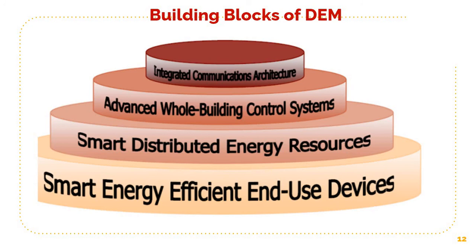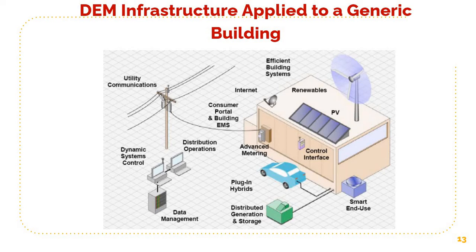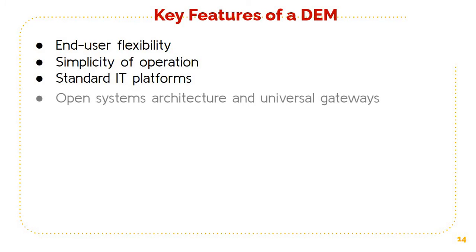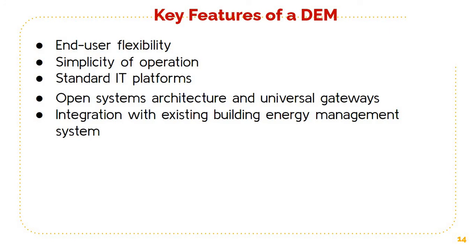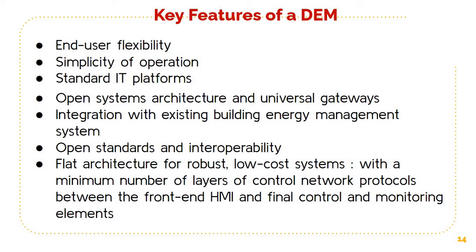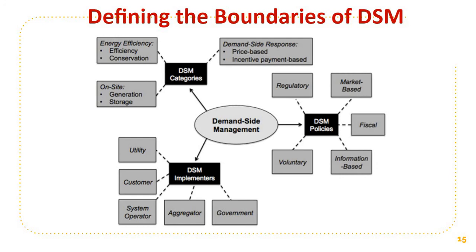You can see the four components listed as building blocks of DEM, and a picture shows the DEM infrastructure applied to a generic building. The key features of DEM are end-user flexibility, simplicity of operation, and standard IT platforms; open systems architecture and universal gateways; integration with existing building energy management systems; open standards and interoperability; and flat architecture for robust, low-cost systems — containing only the minimum number of layers of control network protocols between the front-end HMI and final control and monitoring elements.